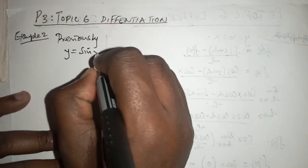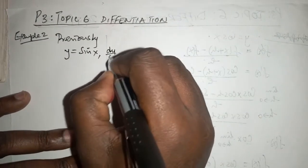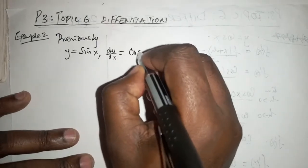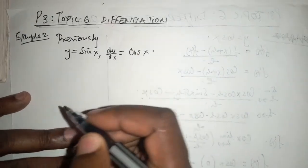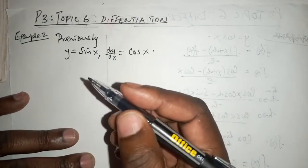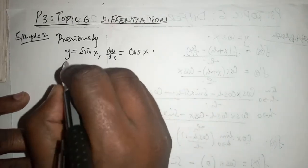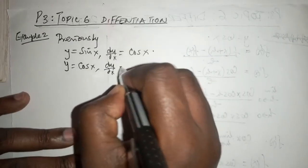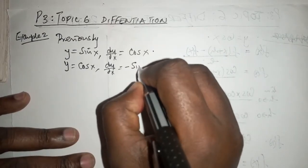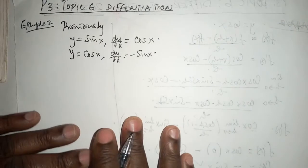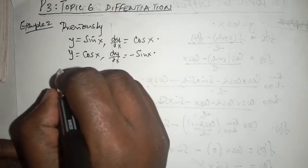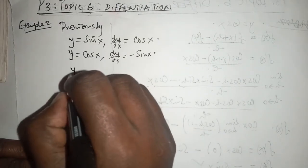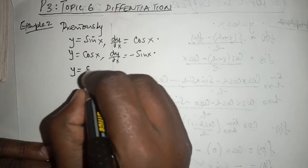That is shown in video 1 in this particular chapter. When y equals cosine of x, then dy/dx equals minus sine of x. And consequently, we are also told that if y equals sine of Kx, then dy/dx equals K cosine of Kx.